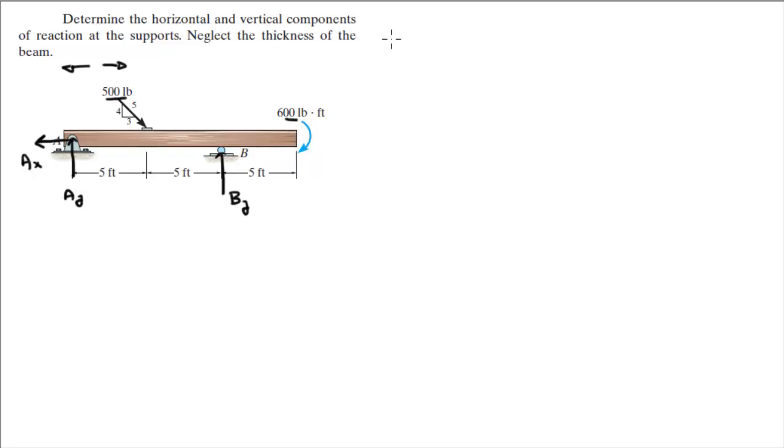Now we know that the sum of the moments at A is equal to 0. Let's assume going clockwise is positive. Why do we start at A? Because if we start at A, we don't have to worry about Ax and Ay, which is two variables. And the only variable that we have to worry about is By.